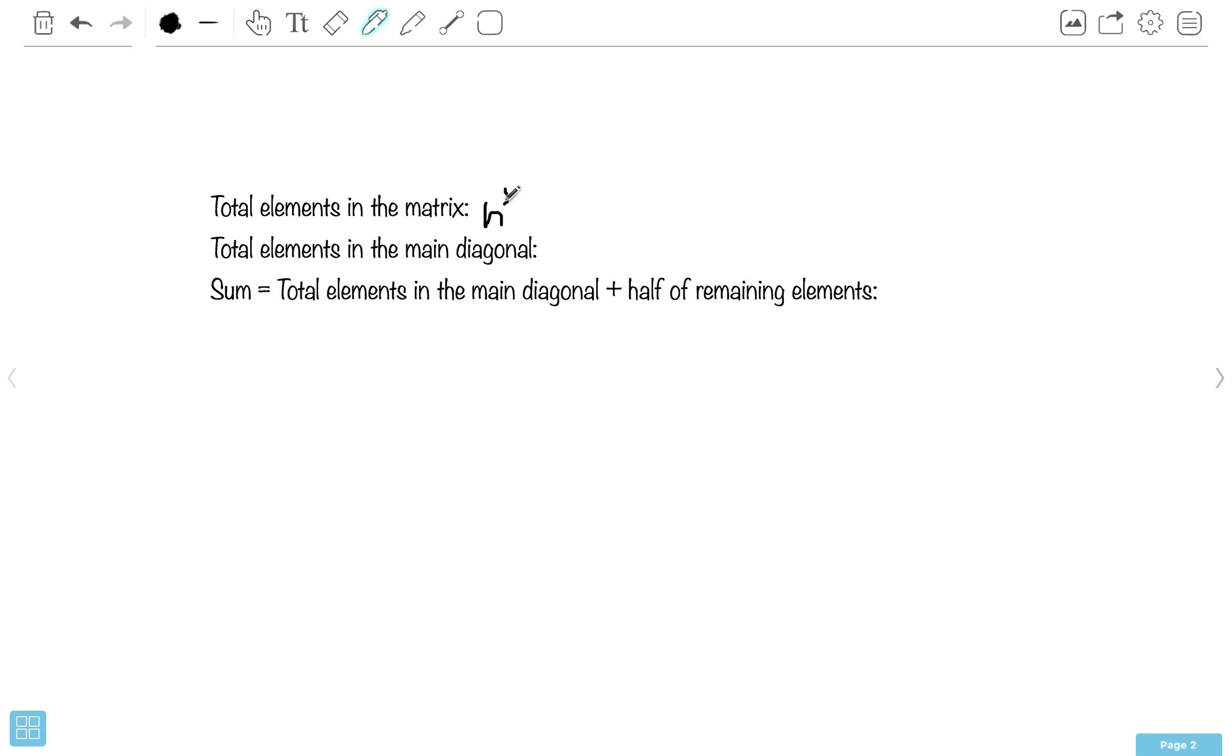Okay, so we just talked about what is the sum. Now, sum is the total elements in the main diagonal plus half of the remaining elements. So total number in the main diagonal is our n, half of the remaining is n squared minus n divided by 2.